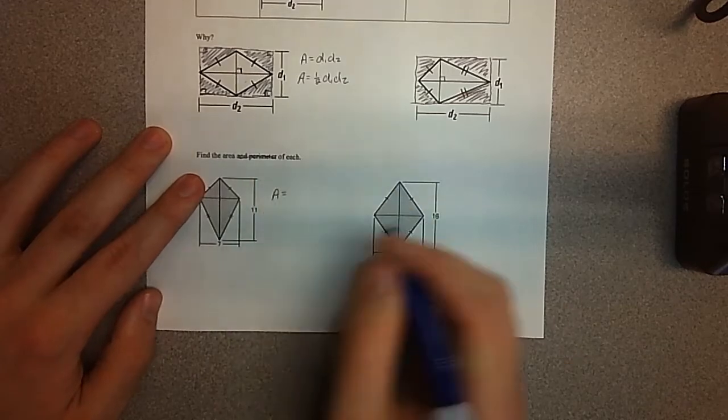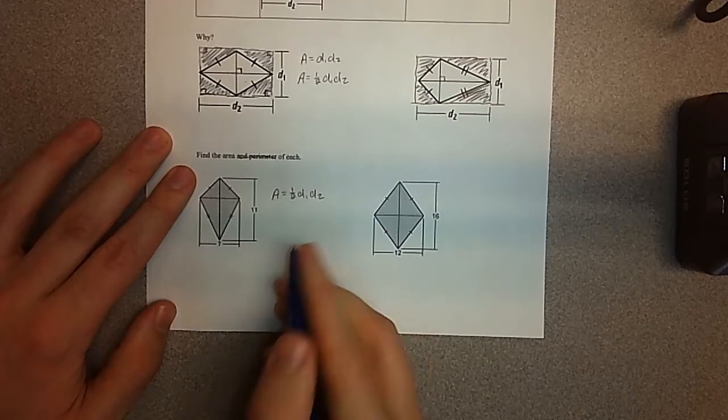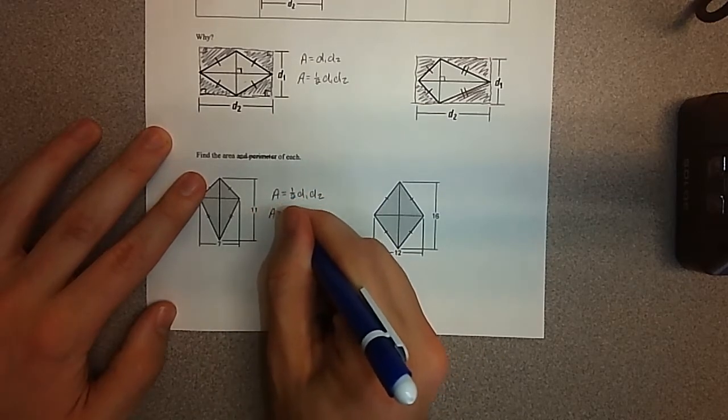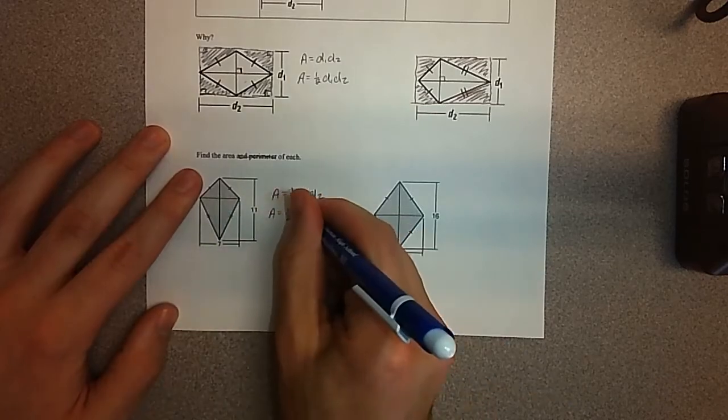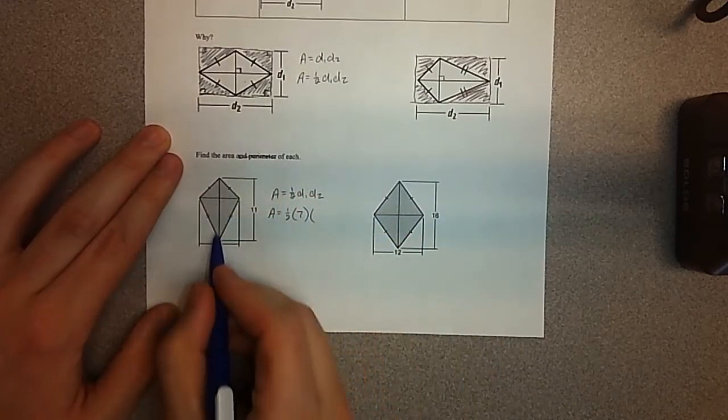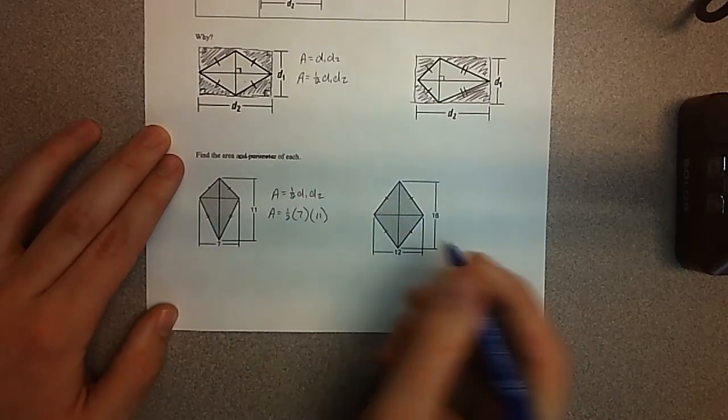Area would equal, and I'm going to have you use one-half times diagonal one times diagonal two. And I'm just going to sub in values. They give me both the diagonals. They say this diagonal right here, if I look down here, says it's seven. Diagonal two, does not matter which one's which, by the way. It's 11.